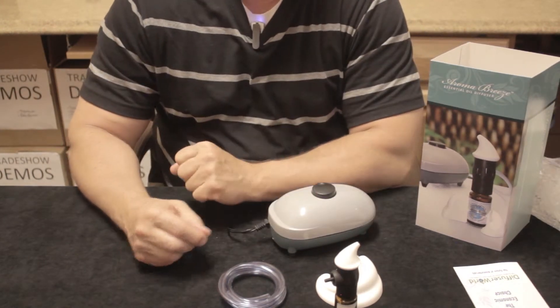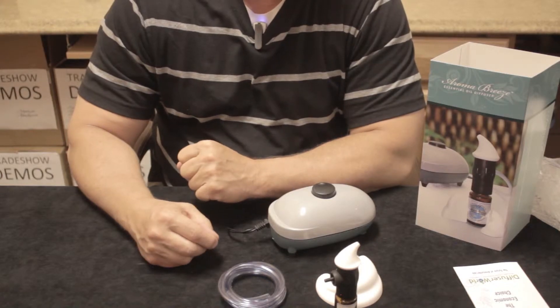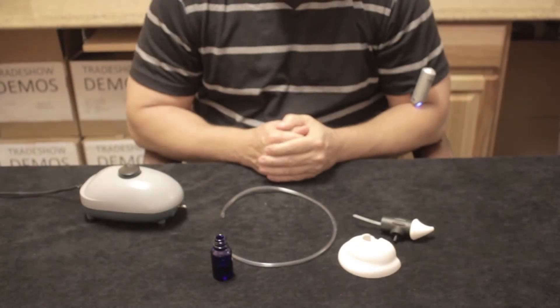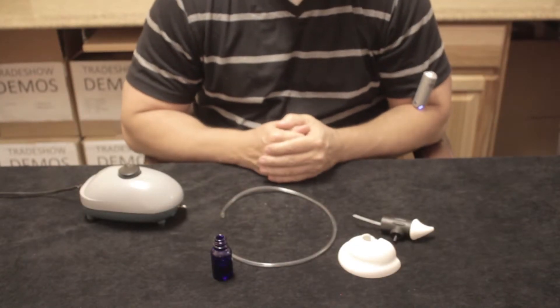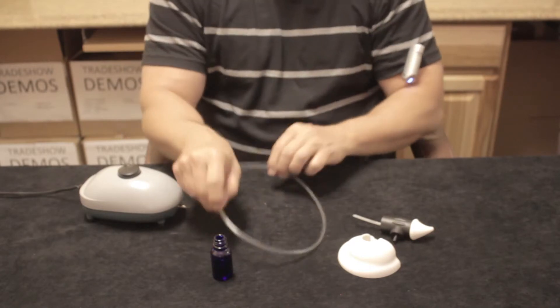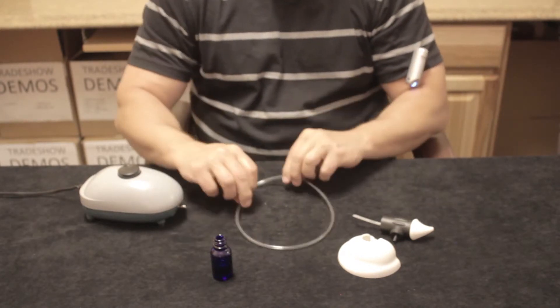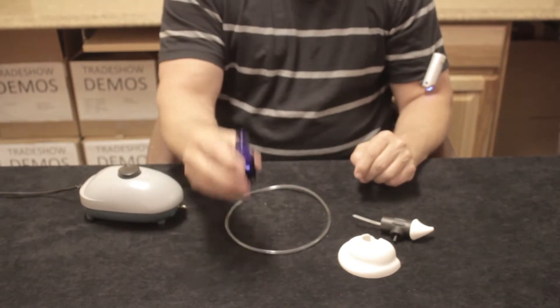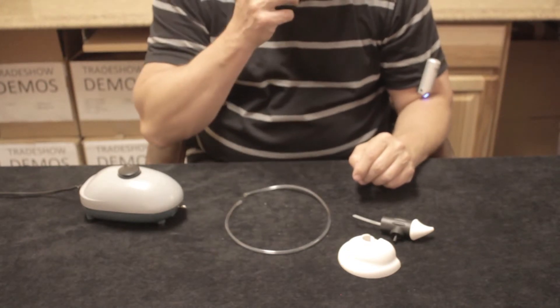Now I'm going to go ahead and assemble these components and demonstrate how this unit works. Okay, so here we have our four components. For demonstration purposes, I've opted for a shorter length of hose, and here I have a bottle that has eucalyptus oil.